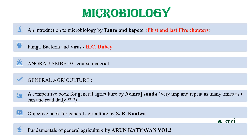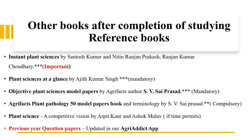You can also go through Arun Katha Volume 2, which includes microbiology, just to recall things you have studied from the main author books. These are the books required to cover the ICAR-JRF Plant Science syllabus for microbiology. For covering the complete plant science, additional books include 'Instant Plant Science' and 'Plant Science at a Glance,' which are very useful for recalling content studied from various author books.